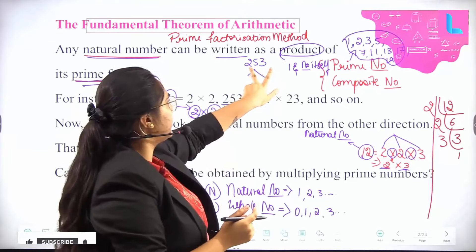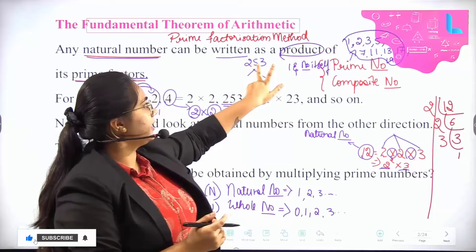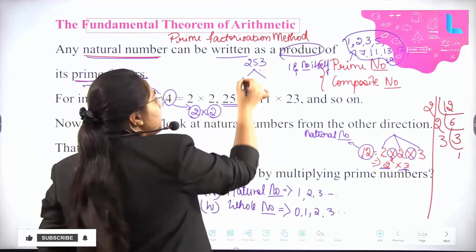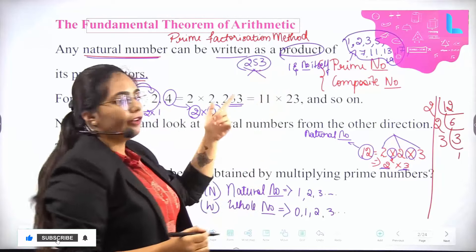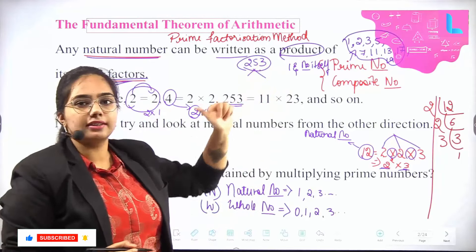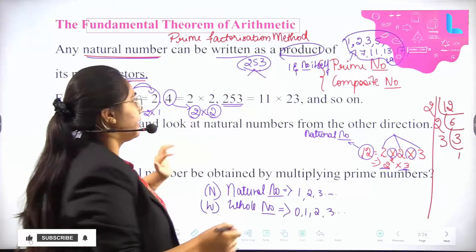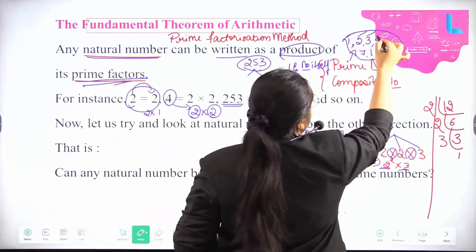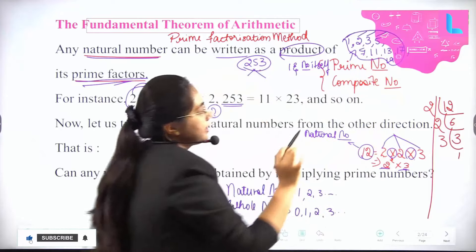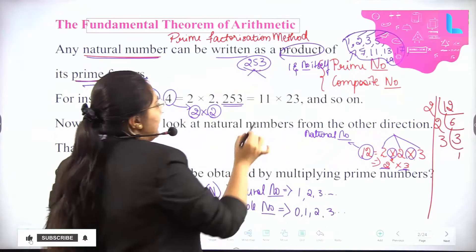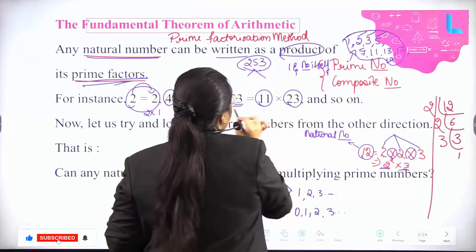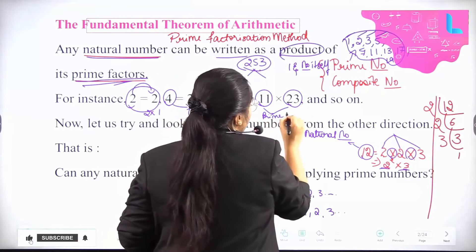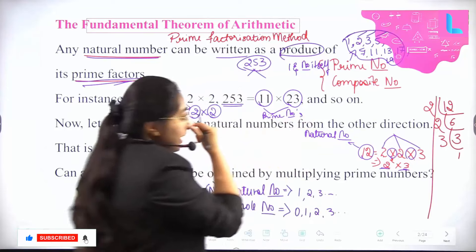For checking divisibility by 3, we add all digits: 2 + 5 + 3 = 10. Since 10 is not divisible by 3, the whole number is also not divisible by 3. For 5, the last digit should be 0 or 5 — it's not. So 7 is also not divisible. Hence 1, 2, 3, 5, 7 are all not divisible. The next prime is 11; 11 × 23 = 253. Both 11 and 23 are prime numbers.